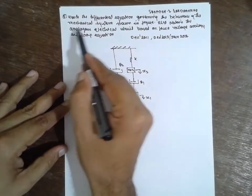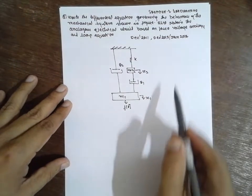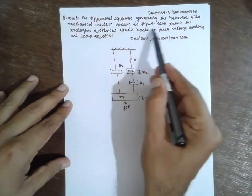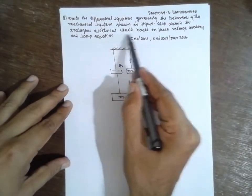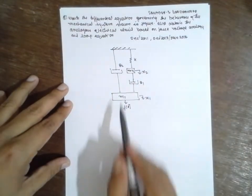This is the diagram. Write the differential equation of the given mechanical system. As you see in the figure, update the analogy of the electrical system using force voltage analogy.